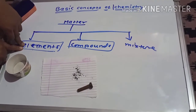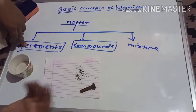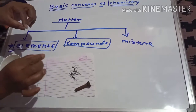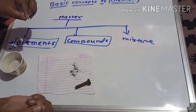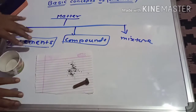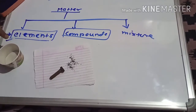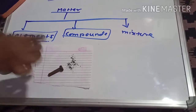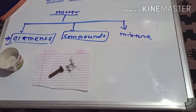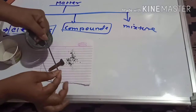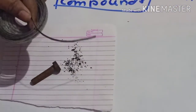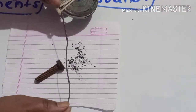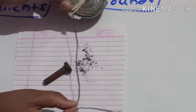All particles are alike here, so this is the element. Elements are substances where all particles present are alike and we cannot divide the substance into simpler substances by any physical or chemical process. Here, this is the magnesium ribbon. It is made up of only one type of substance — magnesium. All the particles present here are alike; we cannot divide it into simpler substances. So, it is also an element.